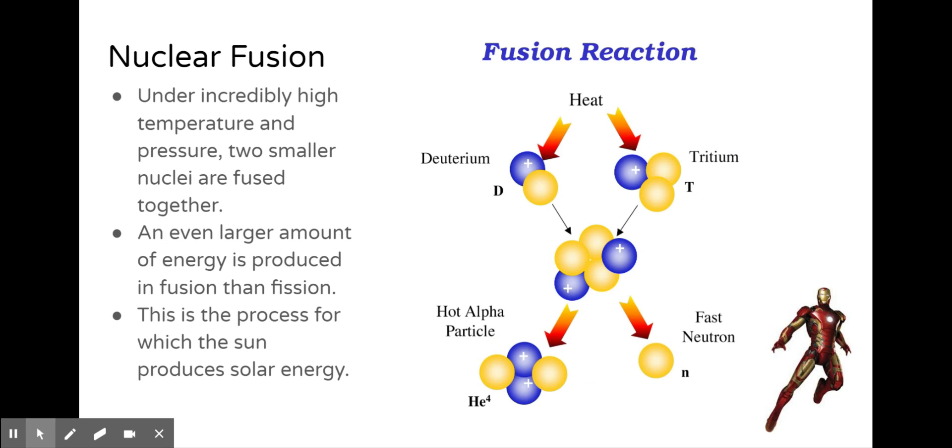Nuclear fusion. Under incredibly high temperature and pressure, two smaller nuclei are fused together. In this example, you have tritium and deuterium, which are two isotopes of hydrogen, large amount of heat and pressure that create and fuse together to create an alpha particle, which is a helium. This is the process that occurs in the sun and produces solar energy.